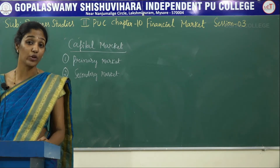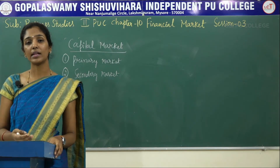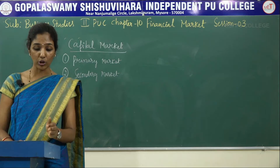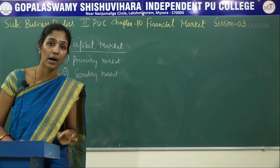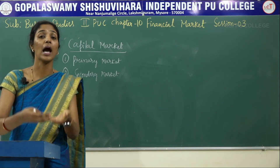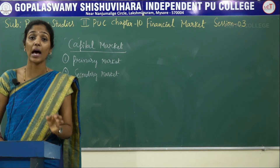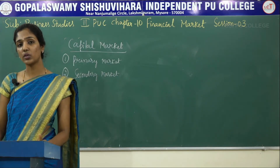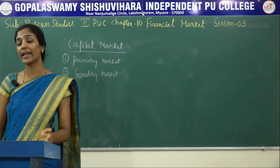Primary market is called new issue market because in this market, securities are sold for the first time by new companies. For example, if you start a company, the basic requirement of any business is finance. The owner of the business can raise the required finance through issue of shares, debentures, or other securities in the specific market called the primary market. The essential function of the primary market is capital formation — it facilitates transfer of surplus funds from savers to entrepreneurs for setting up new projects, diversification, or expansion of business.